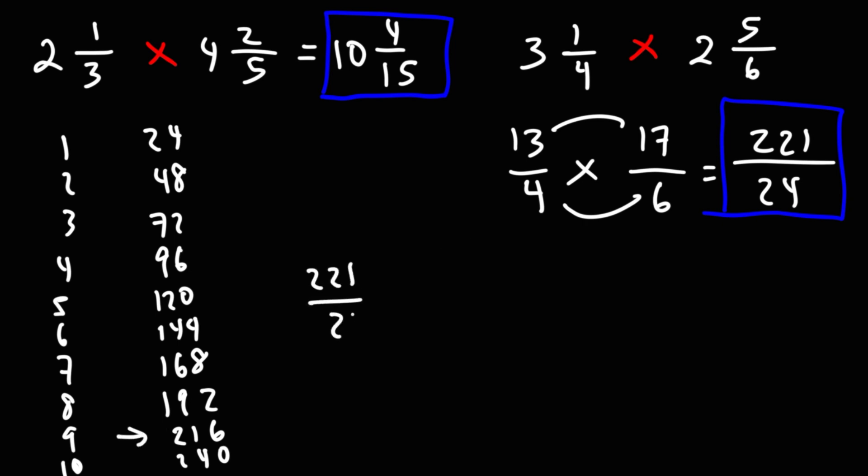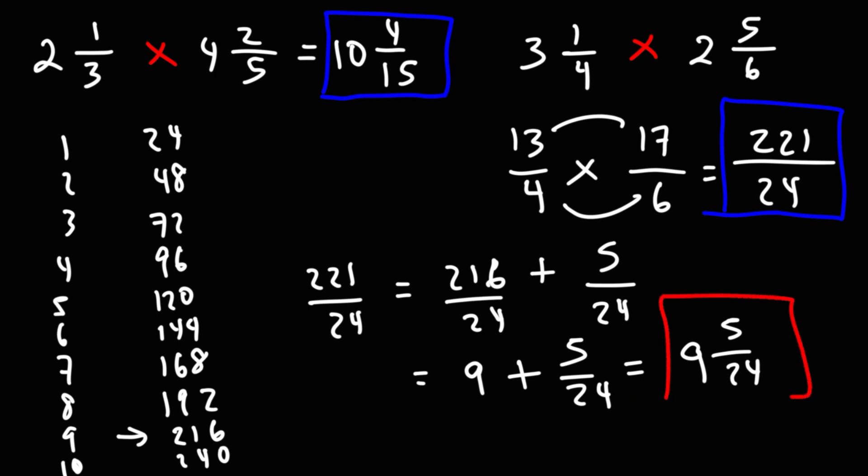So 221, I can break that into 216 and what is the missing number? If we subtract 221 by 216, we'll get the missing number which is 5. Now we know that 216 divided by 24 is going to be 9, because we have to add 24 nine times to get to 216. So now we have 9 plus 5 over 24, which is 9 and 5 twenty-fourths. So this is going to be the answer as a mixed number.